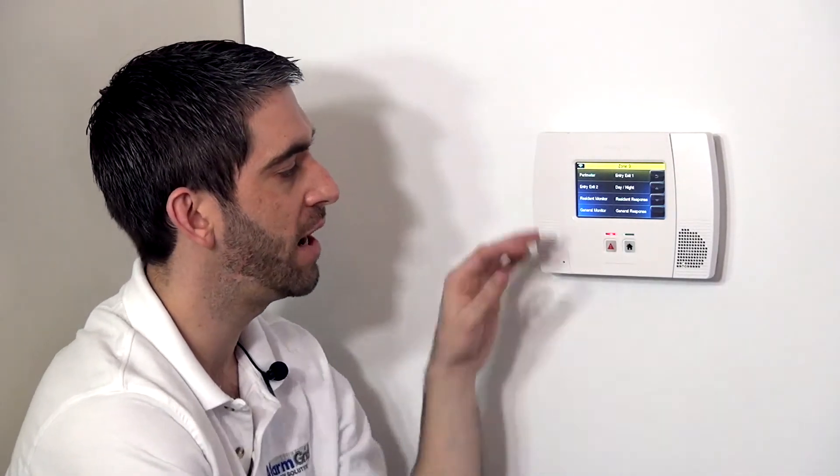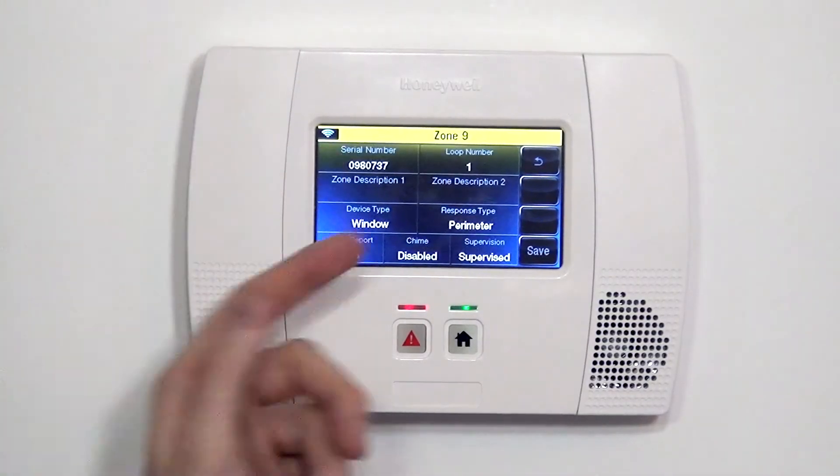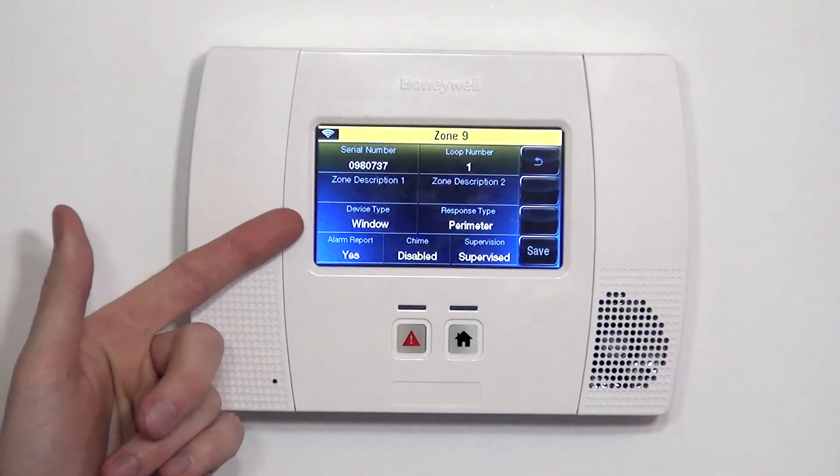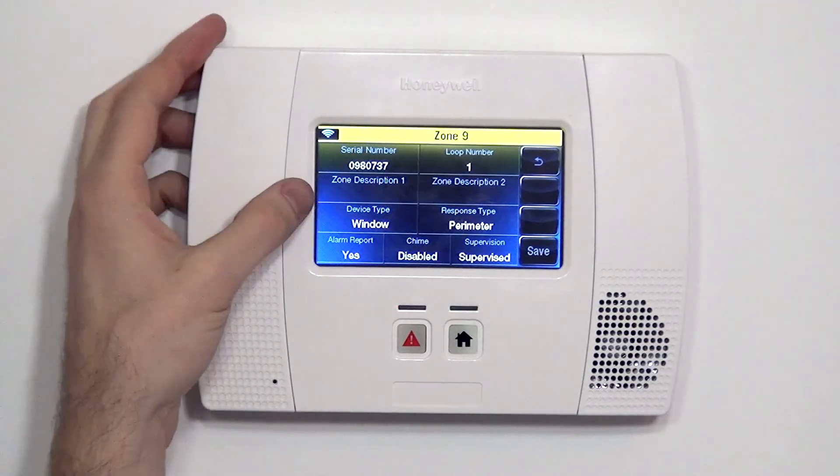Typically with a window, you're always going to want the perimeter response. But there's other options you could use if you're going to vent your window or you wanted it to not alert a full siren, but you want it to chime. In our case, if the window opens and the system is armed, we want an alarm. We want a perimeter response type. 90% of door and window sensors are going to get that perimeter response type.